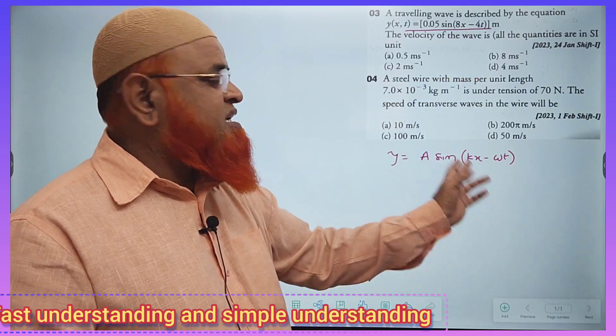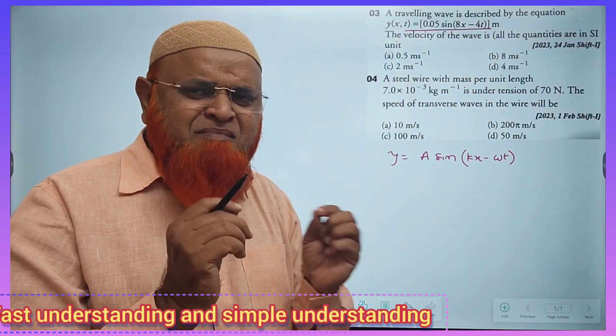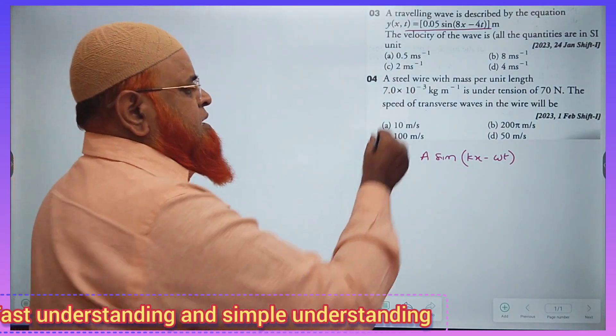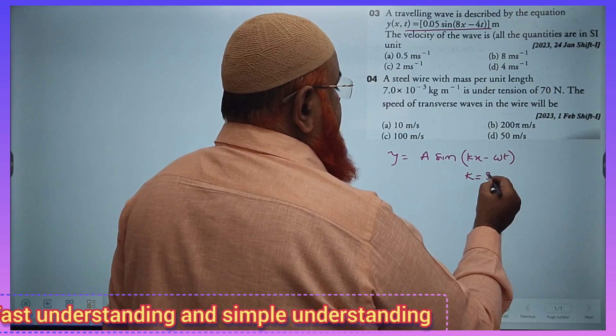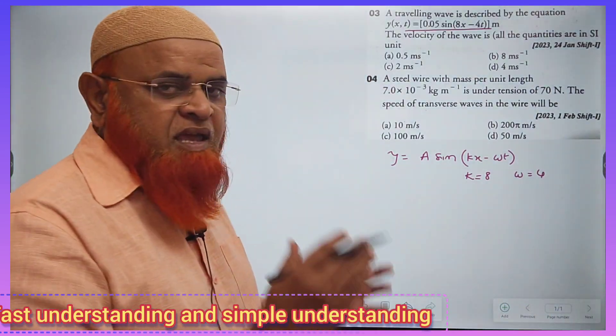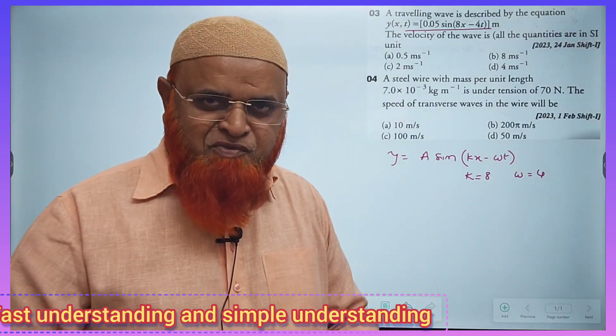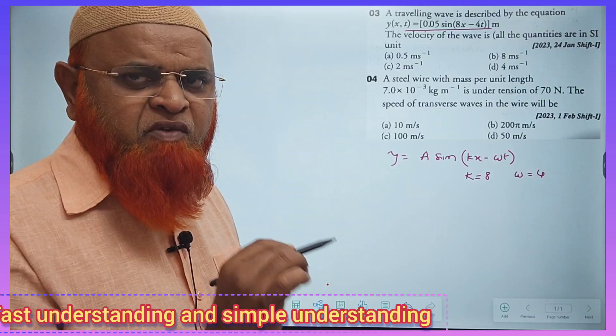x is there means it is kx and t is there means it is ωt. That's it. Very simple way I can explain you here. So from this it is understood that k = 8 and ω = 4. Now just see here, try to understand what I am going to explain now. It's a simple way to understand.